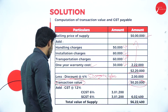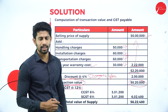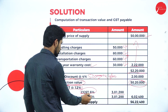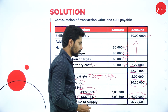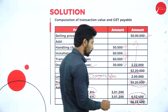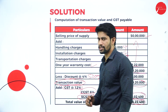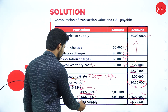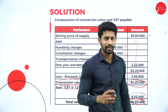On the transaction value of Rs. 50,20,000, add GST at 12%. Since the transaction is happening within the state, CGST is 6% = Rs. 3,01,200, and SGST is 6% = Rs. 3,01,200, totaling Rs. 6,02,400 at 12%. Adding Rs. 6,02,400 to Rs. 50,20,000 gives a total value of supply of Rs. 56,22,400. The transaction value is Rs. 50,20,000 and the total value of supply is Rs. 56,22,400. This question will come for 15 marks in the main exam.